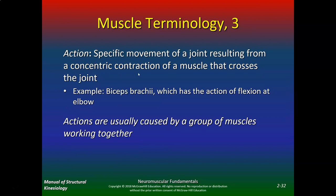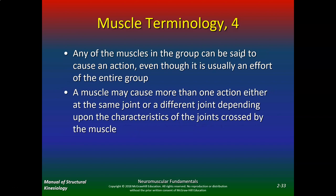Action: the specific movement of a joint resulting from a concentric contraction of a muscle that crosses the joint. Example: the biceps brachii has the action of flexion at the elbow. Actions are usually caused by a group of muscles working together. A muscle may cause more than one action, either at the same joint or a different joint, depending upon the characteristics of the joints crossed — whether it is a one-joint or two-joint muscle. We'll discuss that with the hamstrings and the biceps.